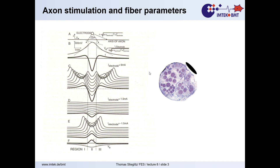I would like to stick today to the peripheral nervous system. We see here a peripheral nerve in cross-section and everything that is purple is nerve fibers. The nerve fibers are grouped in fascicles — bundles — and if we are lucky those bundles are responsible for certain actions: one bundle probably for stretching the fingers, the other one for flexing the fingers.